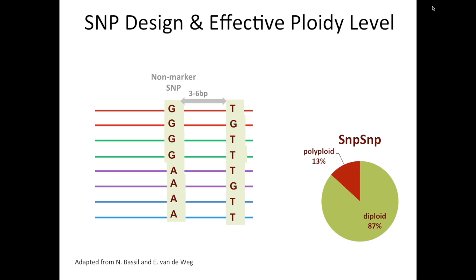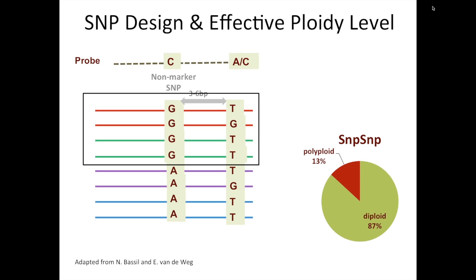Another hypothetical example: what if we have the G at the non-marker SNP in two of the different subgenomes? We can still get diploid segregation. In this case, a probe would anneal to both the red and green subgenomes, but it only so happens that the SNP is segregating in the red subgenome. Thus, we would get diploid scoring and diploid segregation of that particular SNP. That is the SNP-SNP method for SNP design for reducing effective ploidy.